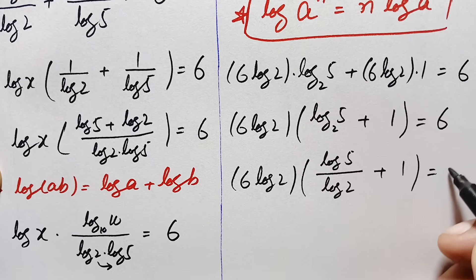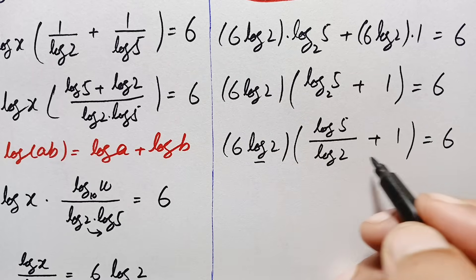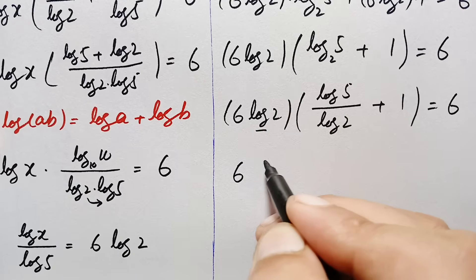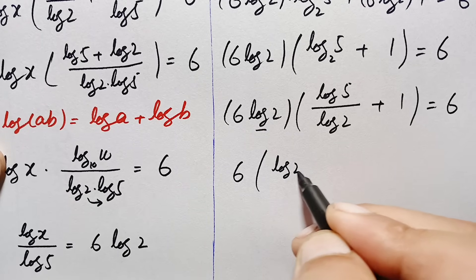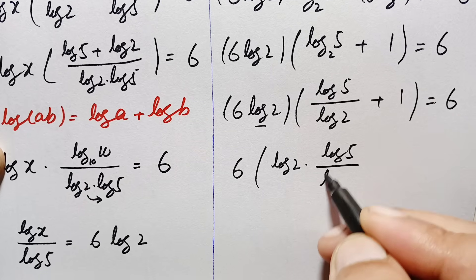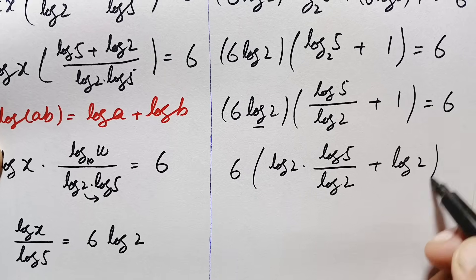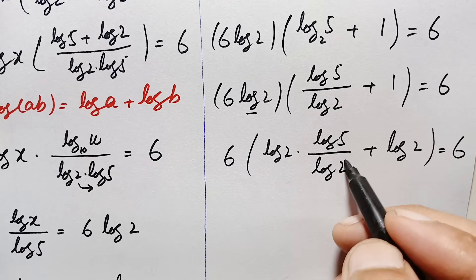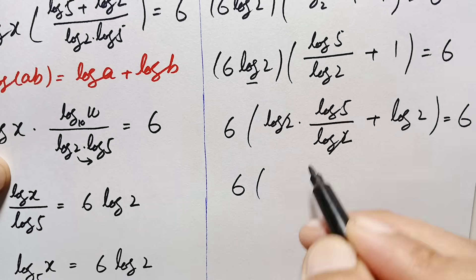We multiply log of 2 inside the parenthesis with both terms. This becomes: 6 times (log of 2 times log of 5 divided by log of 2 plus log of 2) is equal to 6. The log of 2 in the numerator and denominator cancel out.